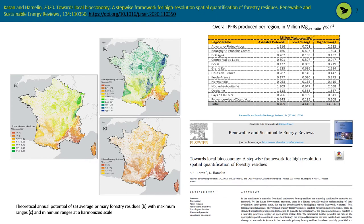In terms of gross volume, the primary forestry residues in France varied from about 4.4 million ton dry matter per year to about 13.9 million ton dry matter per year.